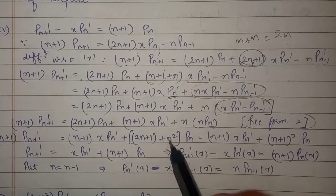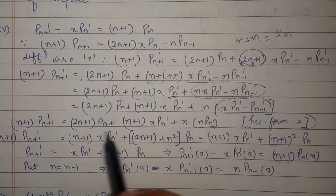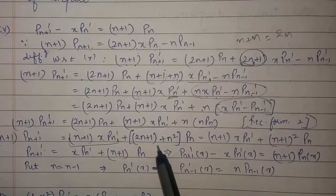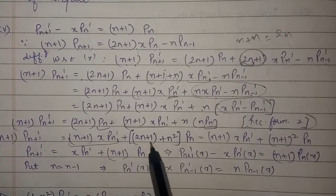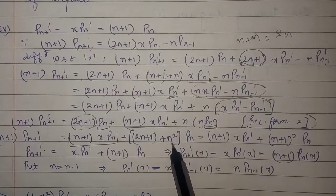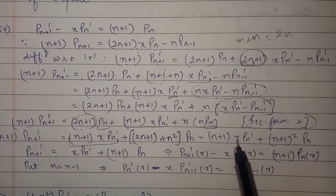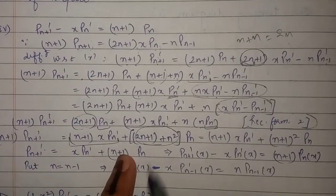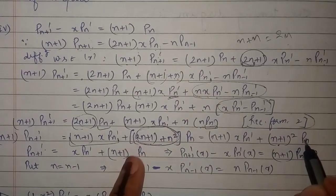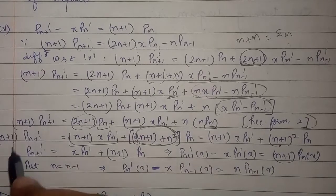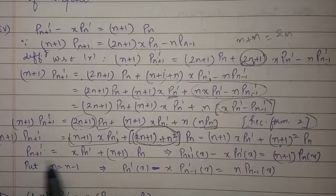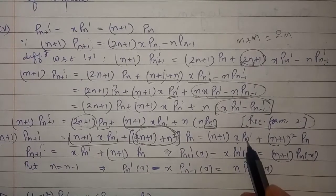We take (n+1)·x·P'(n) and group the P(n) terms together. We get 2n+1 plus n squared, which we can observe equals (n+1) whole squared. So at last we divide the whole equation by (n+1).